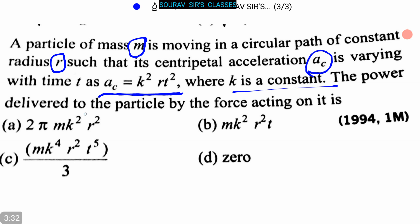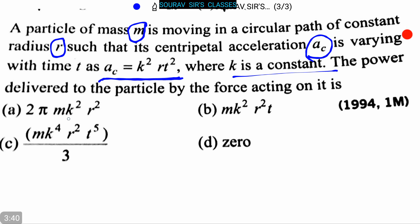The power delivered to the particle by the force acting on it is - and four options are given: (a) 2 pi m k square r square, (b) m k square r square t, (c) m k to the power 4 r square t to the power 5 whole divided by 3, and (d) zero.